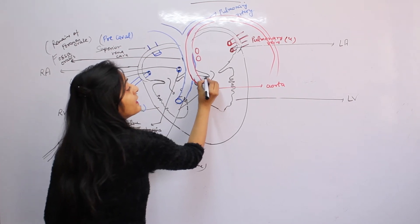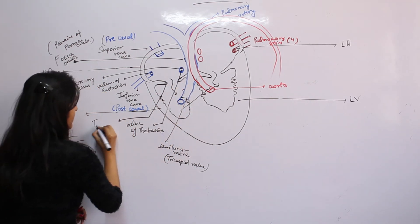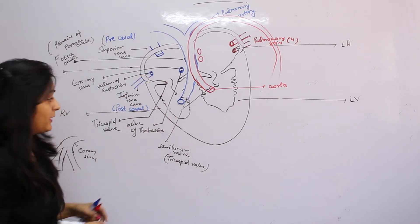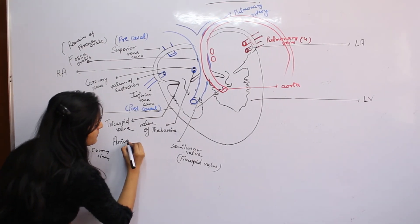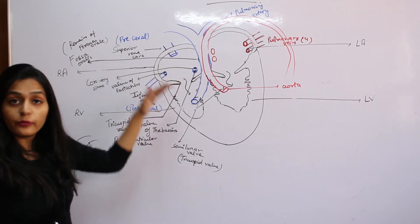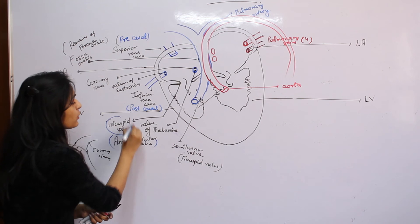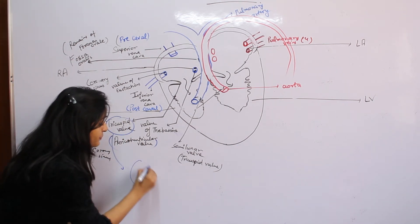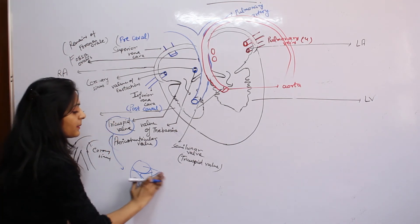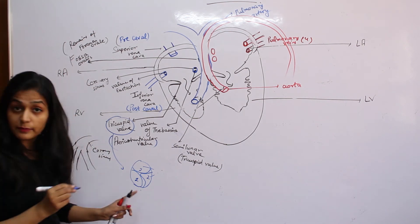Between the chambers, there is a valve. This valve is called the tricuspid valve, the auriculoventricular valve. It's called tricuspid because this valve contains three cusps.